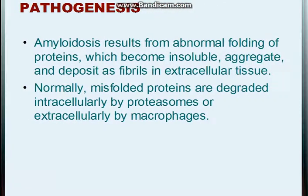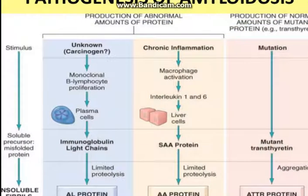Regarding pathogenesis: amyloidosis results from abnormal folding of proteins, which become insoluble and aggregate to deposit as fibrils in extracellular tissues. Normally, these abnormal proteins are degraded intracellularly by proteasomes or extracellularly by macrophages. In amyloidosis, these repair systems are not functioning, leading to abnormal deposition. A stimulus leads to misfolding of a protein, resulting in insoluble fibrils.